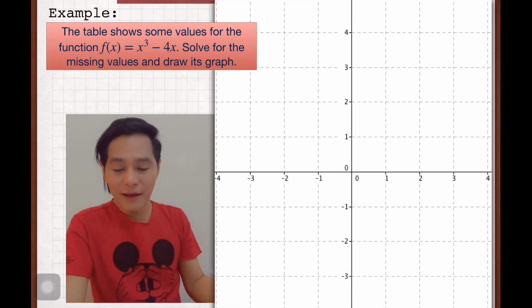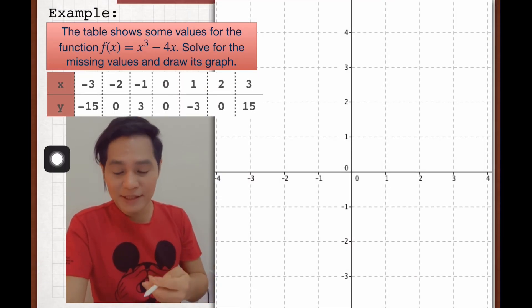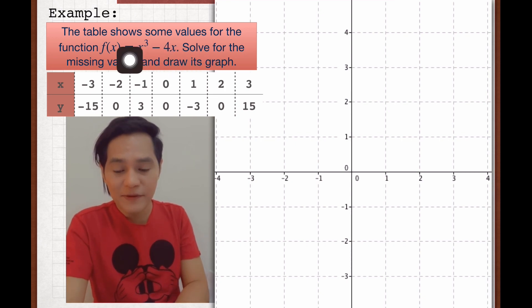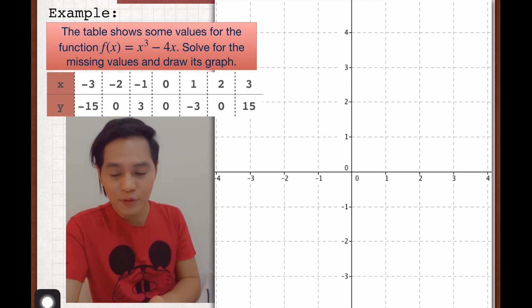Now since we have the missing values, our next task to do is to draw the graph of the cubic function f(x) = x³ - 4x. So what we are going to do is just to plot the following points now. To start with, we have -3 and -15.